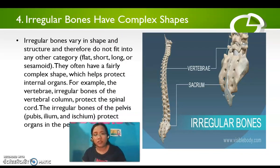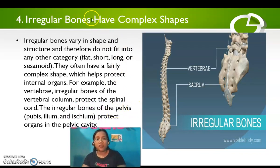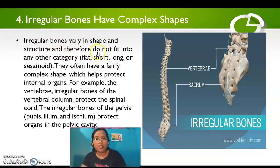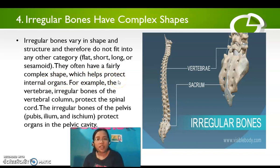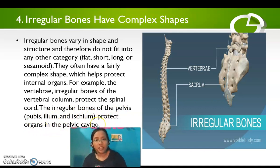Next are irregular bones, which have complex shapes. Irregular bones vary in shape and structure and therefore do not fit into any other category — flat, short, long, or sesamoid. They often have a fairly complex shape, which helps protect internal organs. For example, the vertebral column protects the spinal cord, and the irregular bones of the pelvis — the ilium and ischium — protect organs in the pelvic cavity.